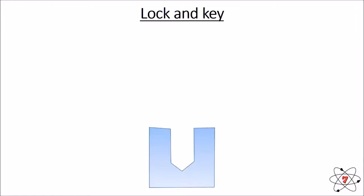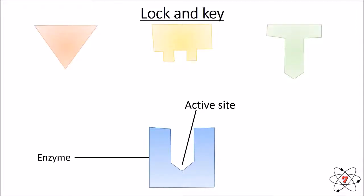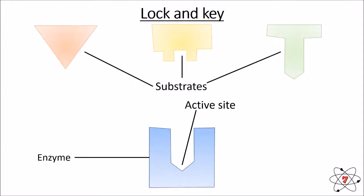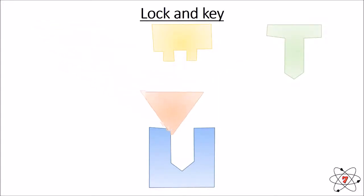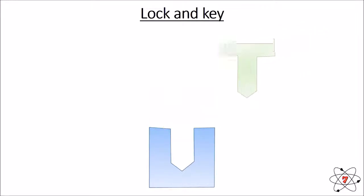Here we have a simplified model of an enzyme, with something called the active site — the part of the enzyme where the reaction takes place. We have three different substrates: chemicals that are either broken apart or put together by an enzyme. The red substrate does not fit into the active site, so no reaction can take place. The yellow substrate also does not fit. The green substrate does fit into the active site, so this enzyme will be able to act on it.